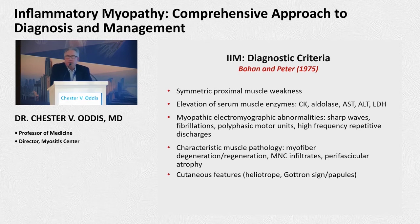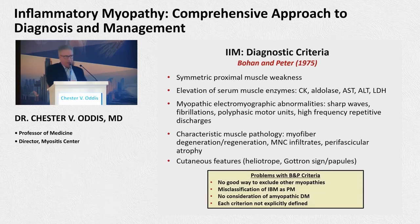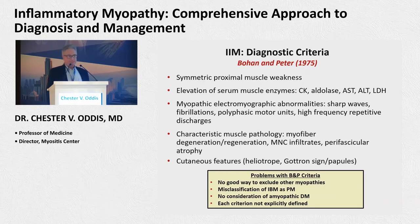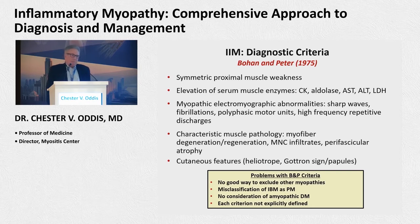The Bohan and Peter criteria include muscle weakness and the objective manifestations of myositis: electrical features, biopsy features, and the rashes. The problem with those criteria — around since 1975 — is there's no good way to exclude other myopathies. In addition, IBM, inclusion body myositis, was probably misclassified in that early criteria.